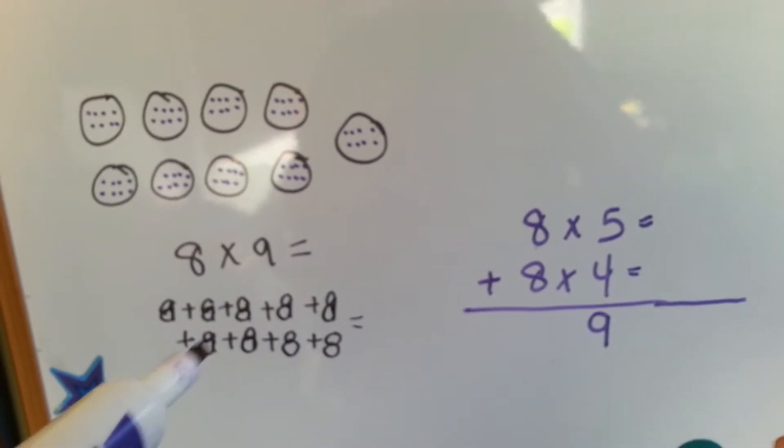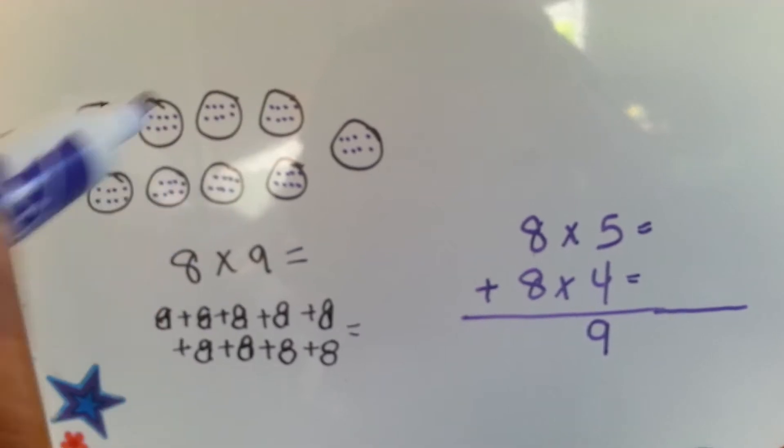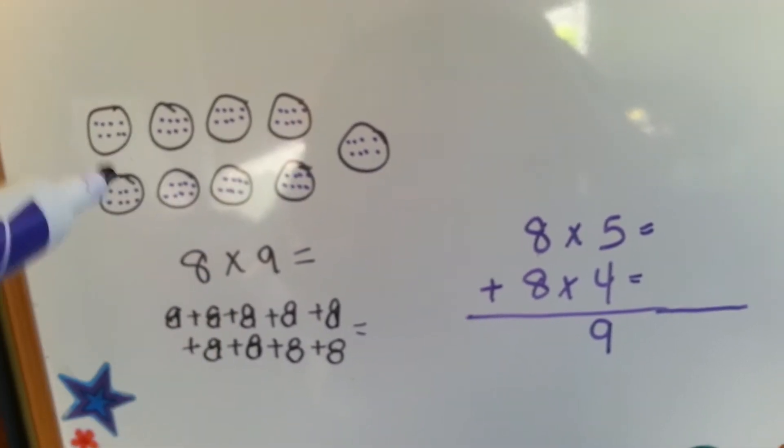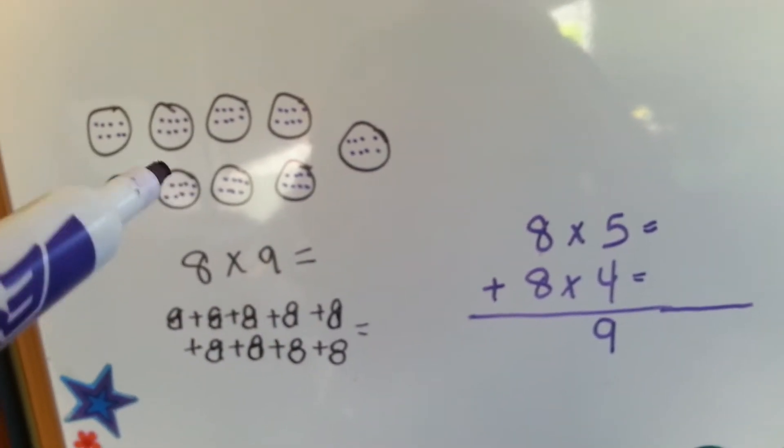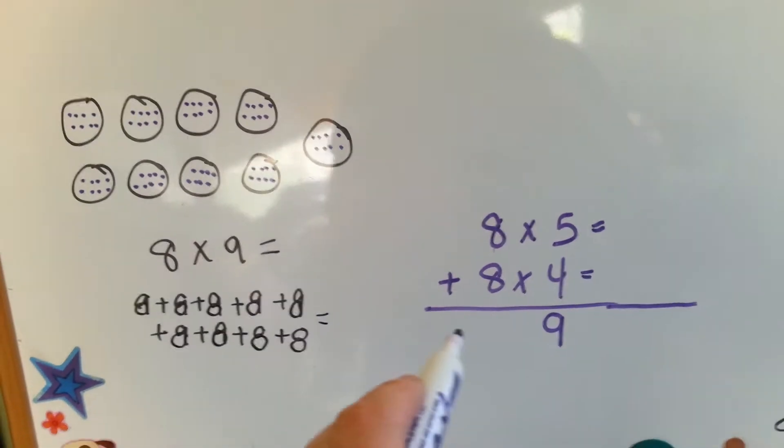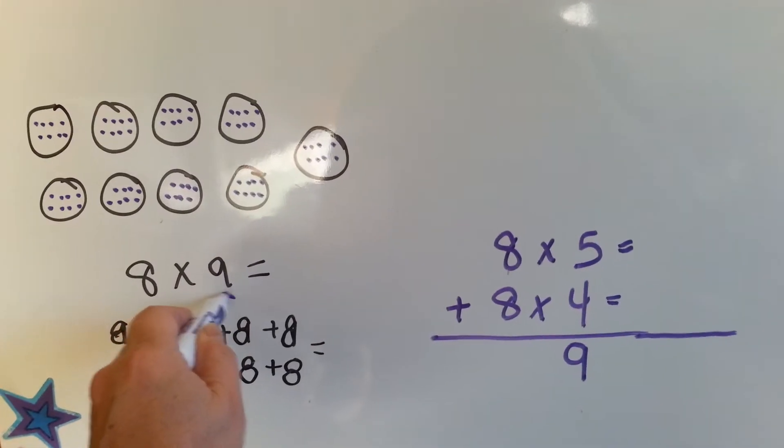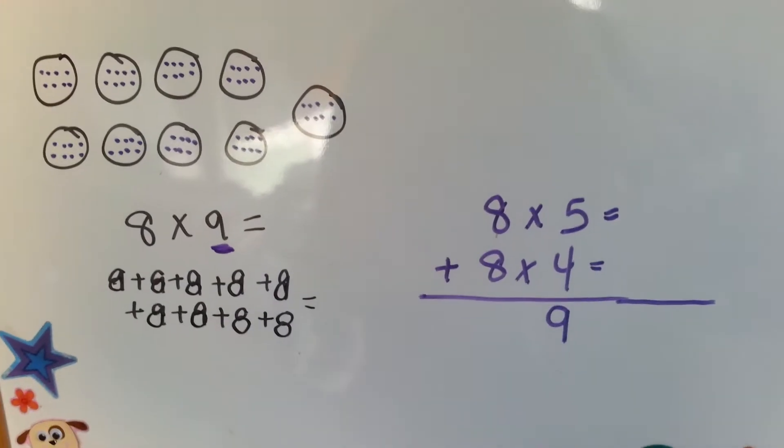One, two, three, four, five, six, seven, eight, nine. See? There's eight inside of each circle and there's nine circles. Well, what you can do is break this nine into smaller numbers.